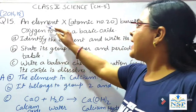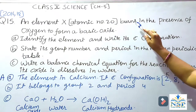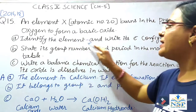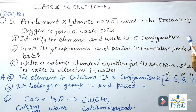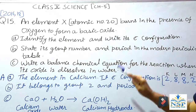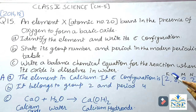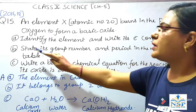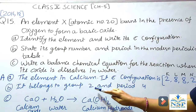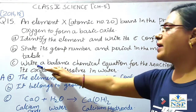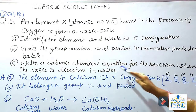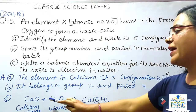An element X has atomic number 20 and burns in the presence of oxygen to form a basic oxide. The element is calcium, because the atomic number of calcium is 20. Its electronic configuration is 2, 8, 8, 2. It belongs to Group 2 and Period 4. When calcium oxide reacts with water, it gives calcium hydroxide.